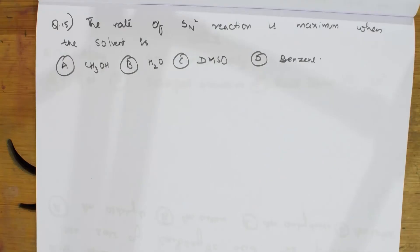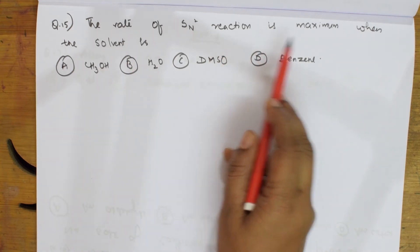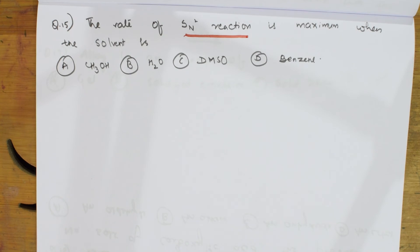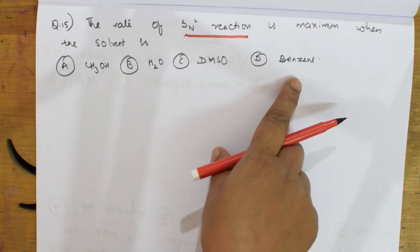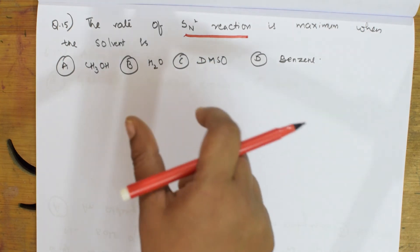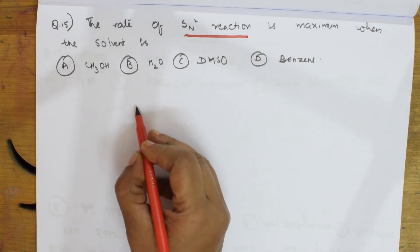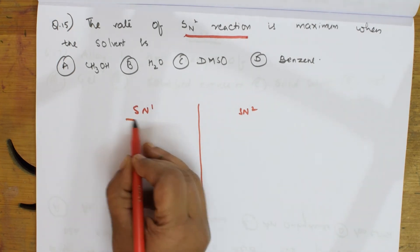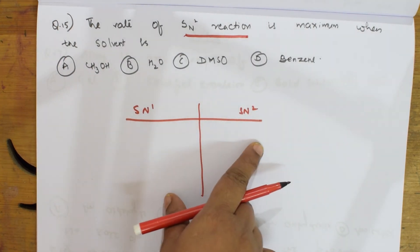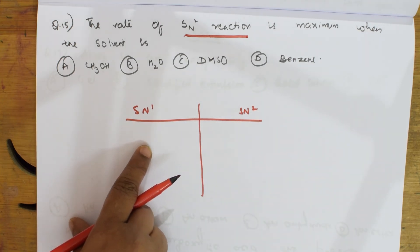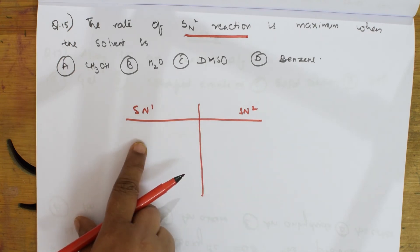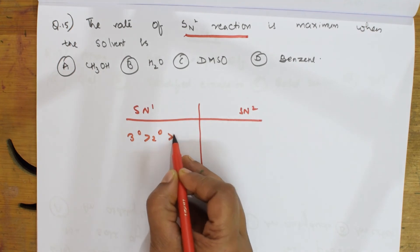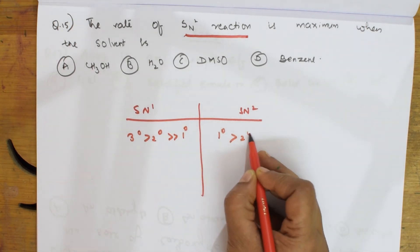Let's come back and see the next question. After that coordination chemistry question, they said the rate of SN2 reaction is maximum when the solvent is — they have given different solvents: methanol, water, DMSO, and benzene. Whenever it is SN2 or SN1 reactions, you have to remember important things. SN1 is unimolecular, SN2 is bimolecular. In SN1 the biggest barrier is carbocation stability. In SN2 it is steric hindrance. For SN1: tertiary > secondary >> primary. For SN2: primary > secondary >> tertiary.